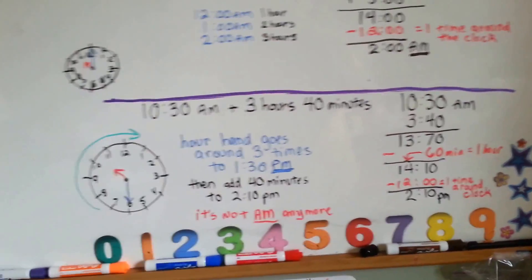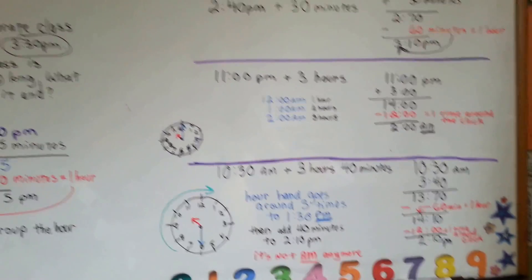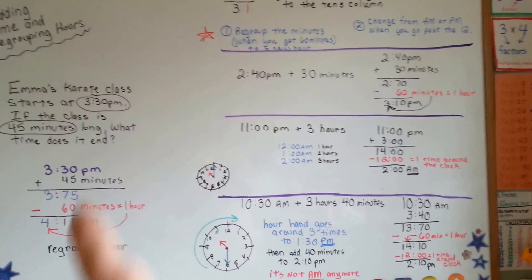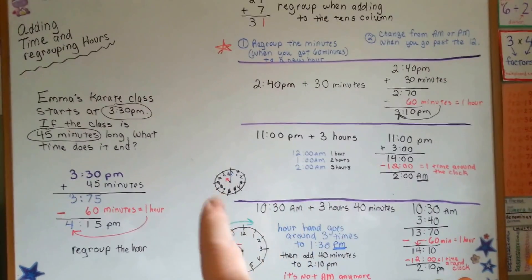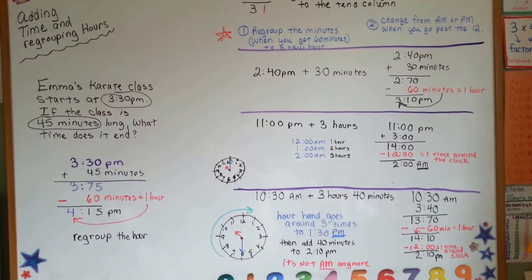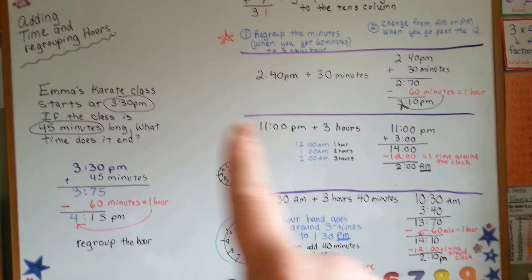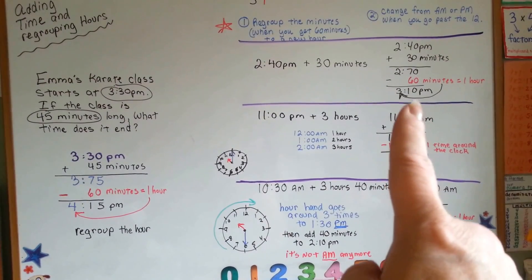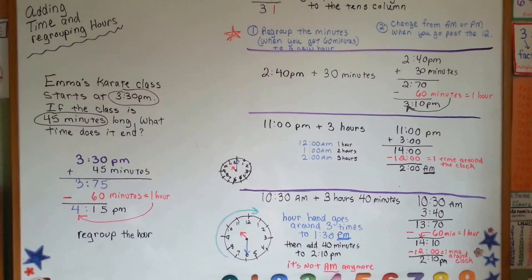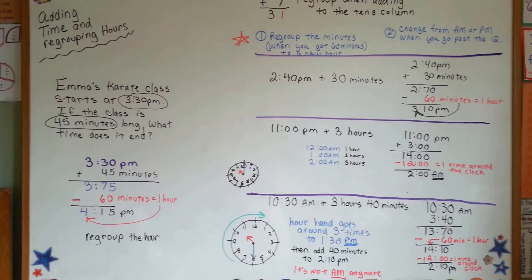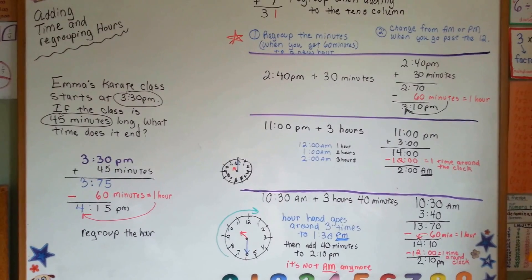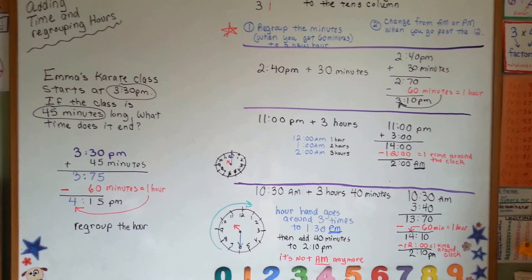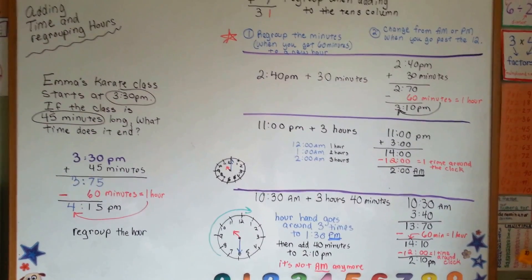Now, this might be a little hard to understand, so if you have to, watch the video again. Get yourself a clock, and spin the minute hand around, and try these times, and add them on the clock, and make the clock spin around. And you'll see that you can add time by regrouping the hours with addition and subtraction. So, regroup just like you would when you regroup your tens. Next video, I'm going to show you how to subtract time when you need to go back in time. See you there. See you later.